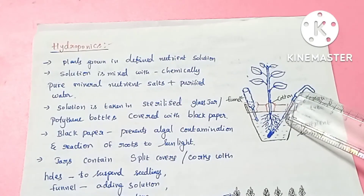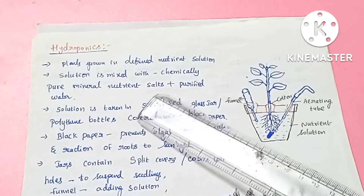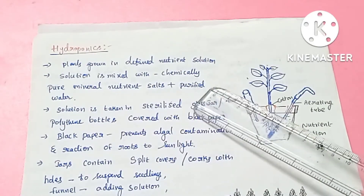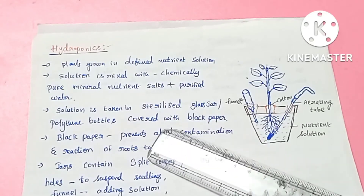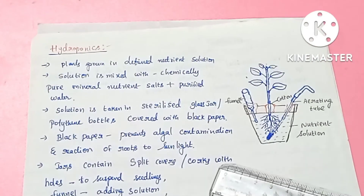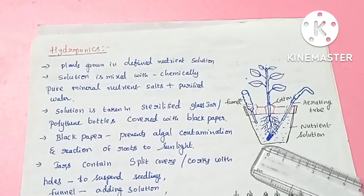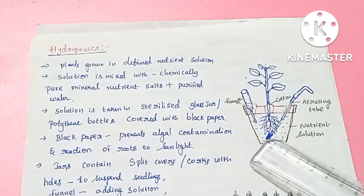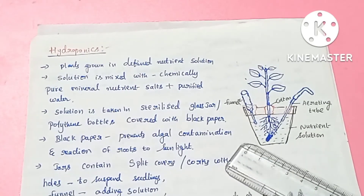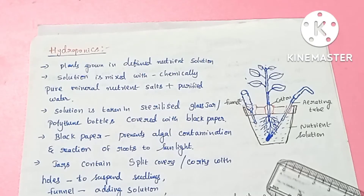Plants are grown in a defined nutrient solution mixed with chemically pure mineral nutrient salts added to purified, contamination-free water. To prepare this solution, glass jars or polythene bottles are used. The bottles are covered in black paper to prevent contamination coming from sunlight, which could affect the roots and contaminate the solution.